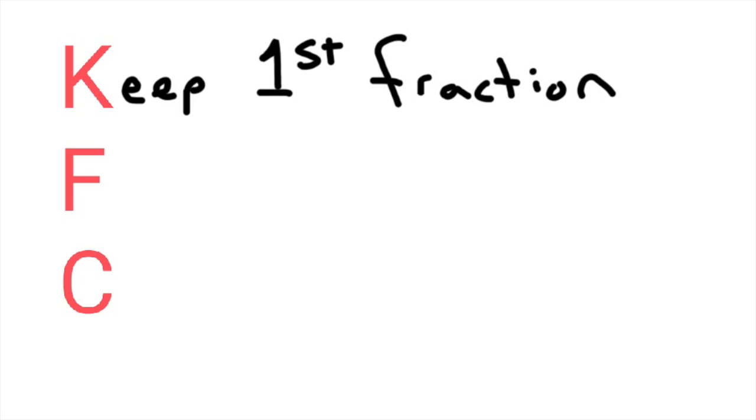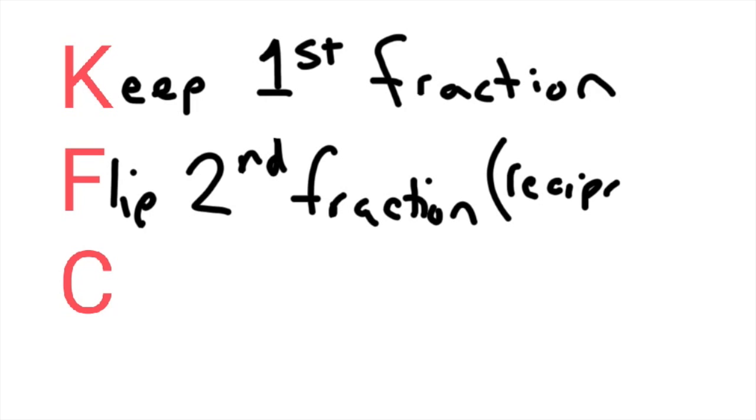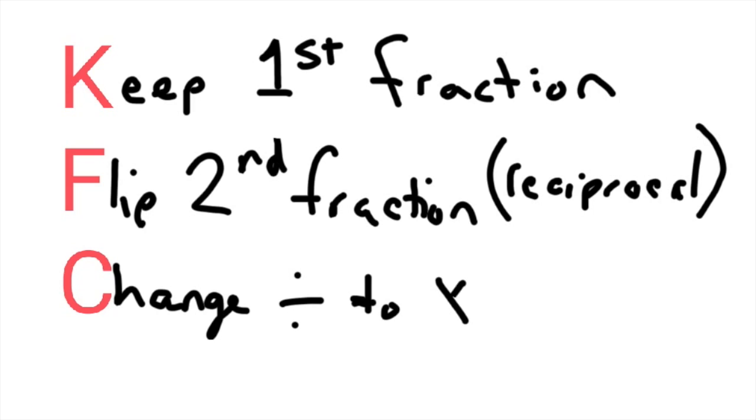So the rules for dividing fractions: first, keep the first fraction. And specifically, we mean don't do anything fancy to it, don't do a reciprocal, just keep it the same. Second, we're going to flip the second fraction—that's the reciprocal. And then finally, change the divide to multiply.